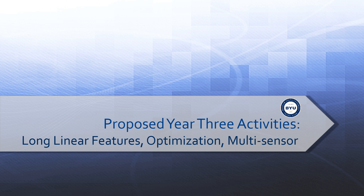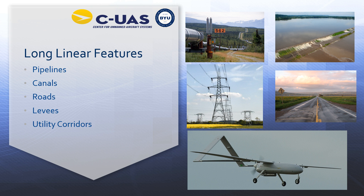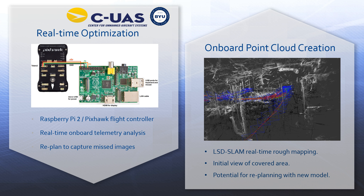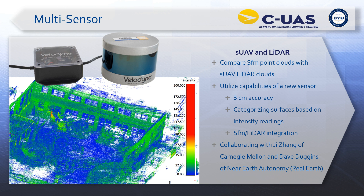Our proposed next activities will focus on long linear features optimization and multi-sensor approaches combining photogrammetric methods with LiDAR. For infrastructure, long linear features include pipelines, canals, roads, levees, and utility corridors. We want to optimize battery life — preliminary results suggest a 10% energy savings. We also want to do onboard processing: instead of pre-processing then flying then post-processing, be able to generate 3D point cloud models and look for anomalies and change detection in real time. We're also combining that with LiDAR pucks to leverage the accuracy of LiDAR with the resolution of structure from motion.